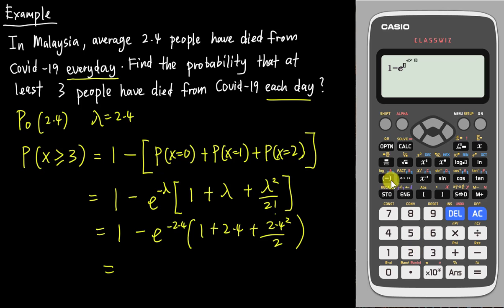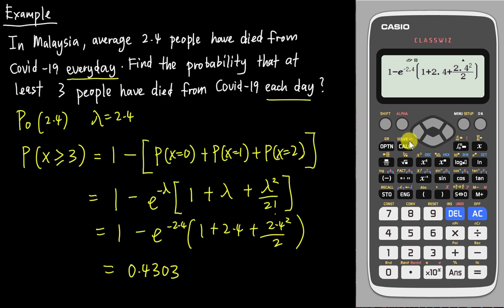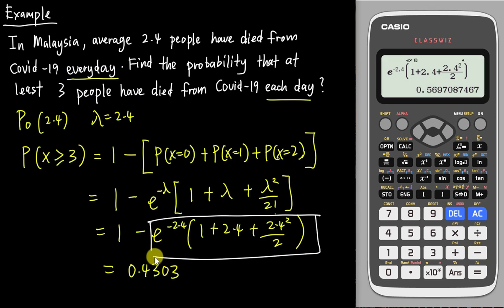On the calculator: shift exponent then negative 2.4, then open a bracket for one plus 2.4 plus 2.4 squared over two, then close the bracket. I get an answer of approximately 0.5697. But I want to note that this is the inner bracket value before doing one minus, so the value of the bracket expression gives me 0.5697, meaning one minus 0.5697 equals 0.4303.